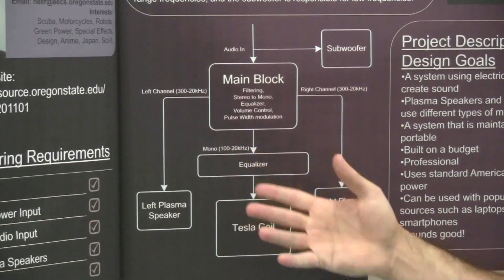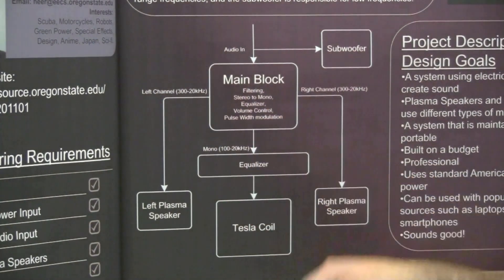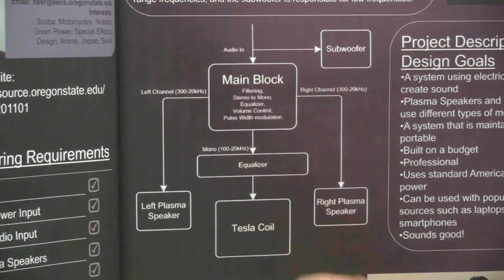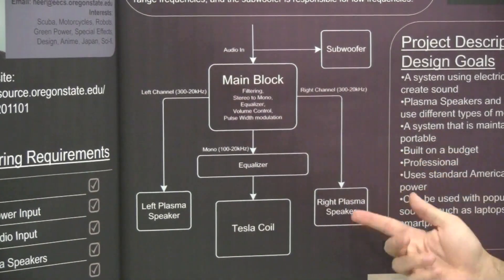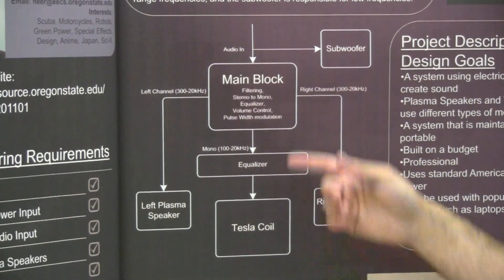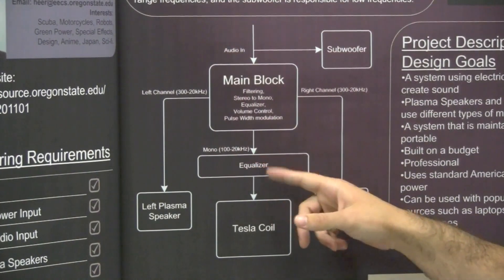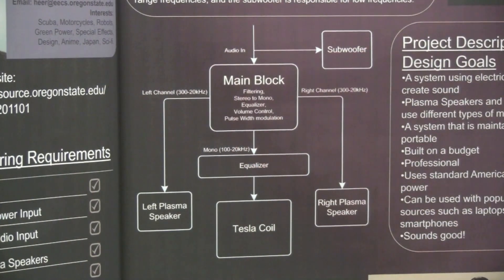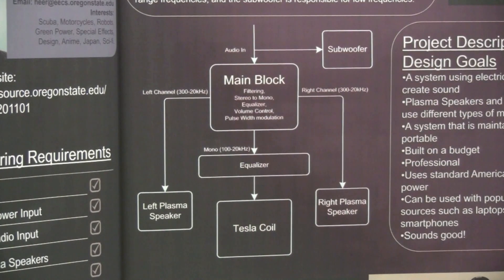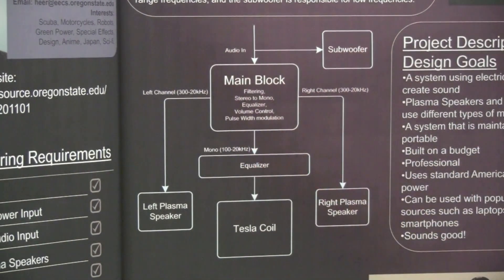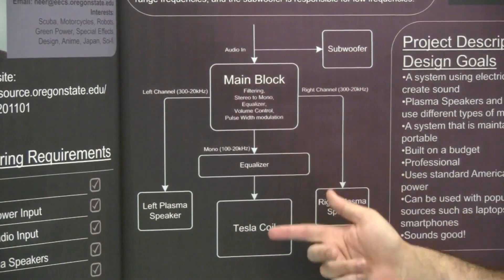So after all that happens, we split the right and left channels off. The left channel, which is roughly 320 kHz, goes off to the left plasma speaker, and same thing with the right channel for the right plasma speaker. The Tesla coil signal gets turned into mono, and that's pretty much the full spectrum except for the low end, below 100 Hz. That goes to the equalizer, which is actually fed back to the main board PCB, but directly goes to the Tesla coil after that, as a pulse width modulated signal.